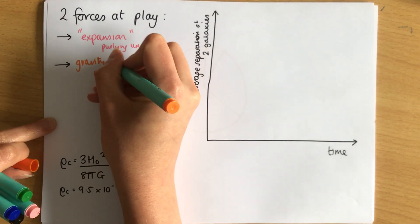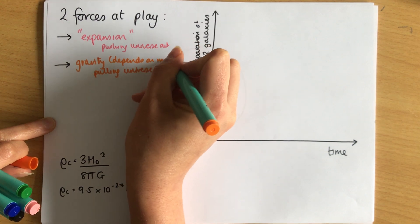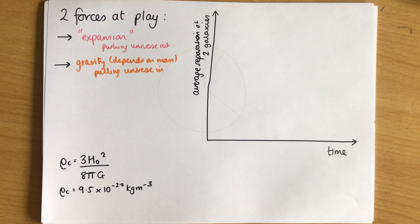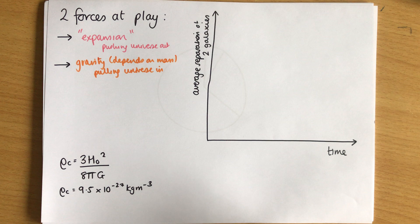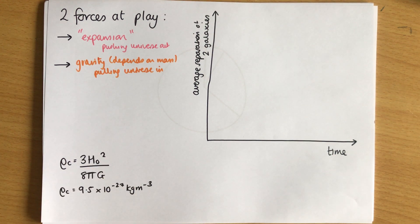Gravity depends on the mass of the universe. The more mass there is, the stronger gravity is and the more the universe will pull inward. Just like in stellar evolution, you have one force pulling in and one pushing out, and whichever is bigger determines what happens. There are three possible fates of the universe arising from these two forces.